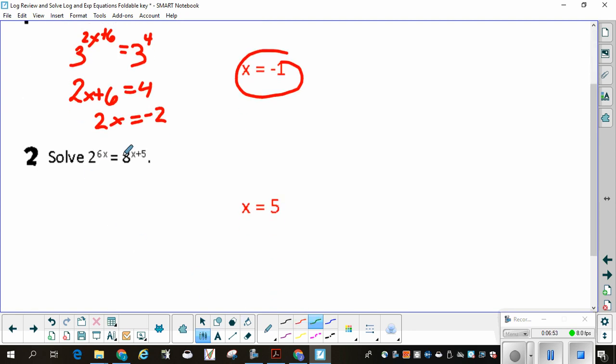The second one we have here is 2 raised to the 6x equals 8 to the x plus 5. I can rewrite 8 using 2 to the 6x. So I'm going to have 2 to the 6x is equal to 2 cubed raised to the x plus 5. Remember when you raise a power to a power, you multiply. In multiplying, I have to distribute that 3. If you don't distribute that 3, you're going to have problems. Now you have 2 to the 6x is equal to 2 to the 3x plus 15.